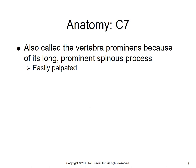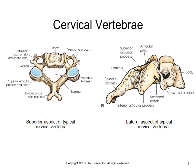C7 is also called the vertebral prominence because of its long prominent spinous process, and it's very palpable in the lower neck area. On a typical cervical vertebra you can see that bifid spinous process — the tip of it is split. And once again you have those transverse foramina for the location and protection of the vessels going to the brain.